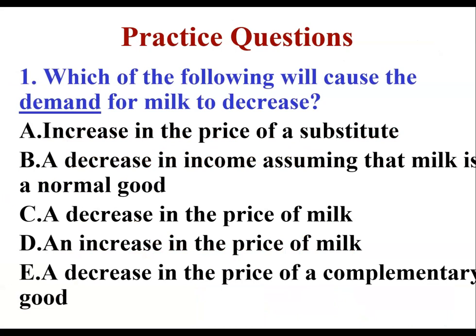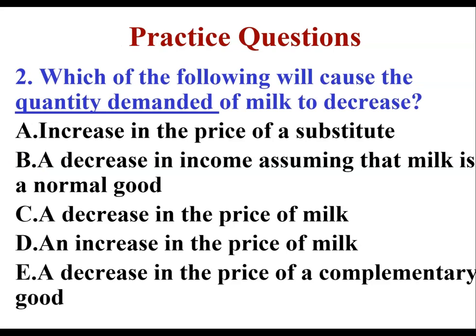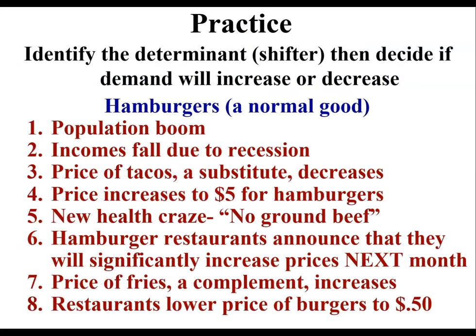Read this practice question and see if you can determine the answer. The answer would be B. Here's another practice question, and the answer would be D. Here's some more practice — you can pause the video, determine the shifter, and decide whether demand will increase or decrease. The good in question is hamburgers, a normal good.